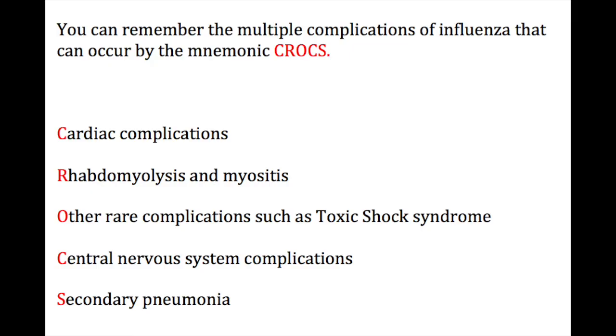So a quick review, guys. You can remember the multiple complications of influenza by the mnemonic CROCS — like the shoe, spelled C-R-O-C-S. The first C stands for cardiac complications. R stands for rhabdomyolysis and myositis. O stands for other rare complications such as toxic shock syndrome. The second C stands for central nervous system complications. And S stands for secondary pneumonia — which, remember, is by far going to be the most common secondary complication seen. Well, that's everything for today. While the flu is mainly a self-limiting upper respiratory infection, it kills people every year and has the potential to cause numerous complications, especially in high-risk individuals. As always, if you have any questions or concerns, please email me at gray@physicianassistantboards.com. Until next time.